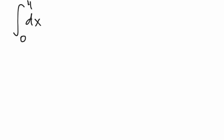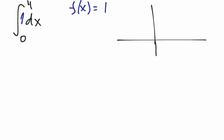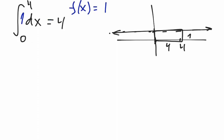Now we can do some basic integrals. The simplest is the integral from zero to four of just dx. Notice there's an invisible one here, so the function we're integrating is f of x equals one. Drawing the graph: f of x equals one is a horizontal line. We're integrating from zero to four, and it's a rectangle — four times one — so the area is four.